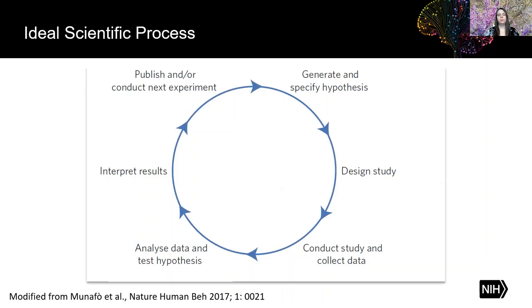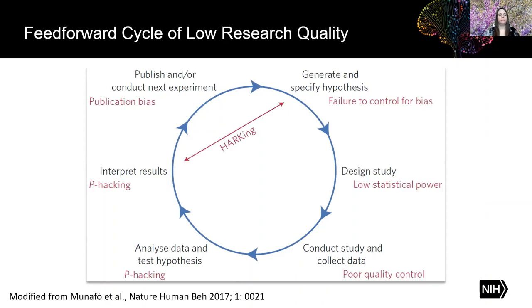Let's turn our attention to experimental design. In black is ideally how the scientific life cycle should work: you generate and specify your hypothesis, you design your study, you conduct the study and collect data, you analyze data and test the hypothesis, you interpret the results, and then you publish the experiment. But at each of these stages, less rigorous research practices can creep in to help create spurious results.